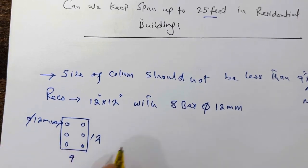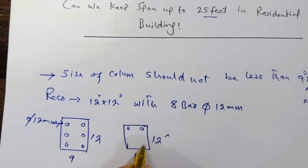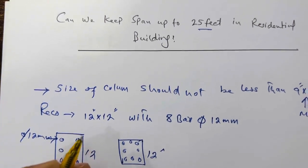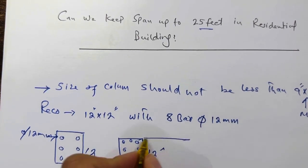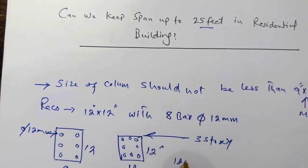This is first one and the second one is the size should be 12 inches by 12 inches with eight bars up to three story. For three story, if the span is up to 25 feet, the diameter should be 12 millimeter.